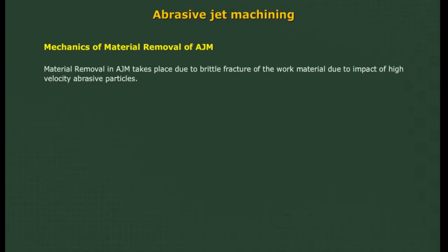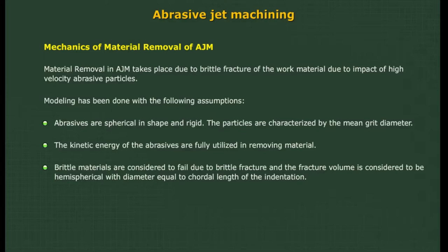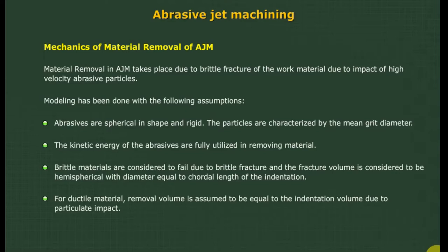Modeling of material removal: material removal in AJM takes place due to brittle fracture of the work material caused by the impact of high-velocity abrasive particles. Modeling is done with the following assumptions: (1) abrasives are spherical and rigid, characterized by mean grit diameter; (2) kinetic energy of the abrasives is fully utilized in removing material; (3) brittle materials fail due to brittle fracture with a hemispherical fracture volume; (4) for ductile material, removal volume equals the indentation volume due to particulate impact.